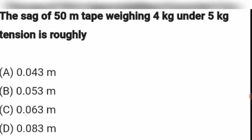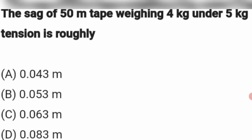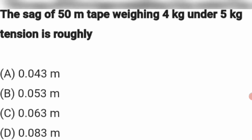Next question: The sag of a 50-meter tape weighing 4 kg under 5 kg tension is roughly how much? The sag equals 0.083. Option D: 0.083.